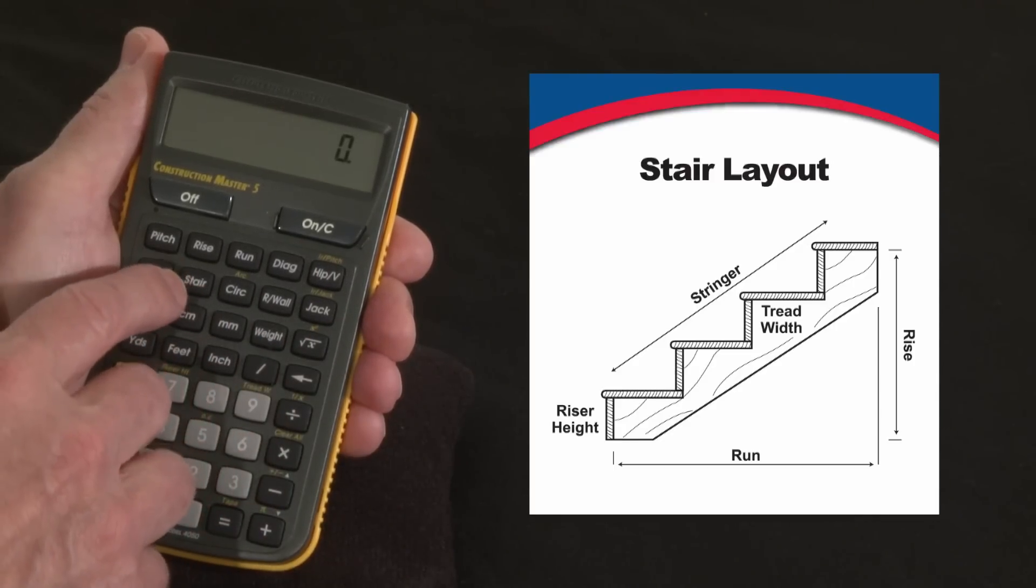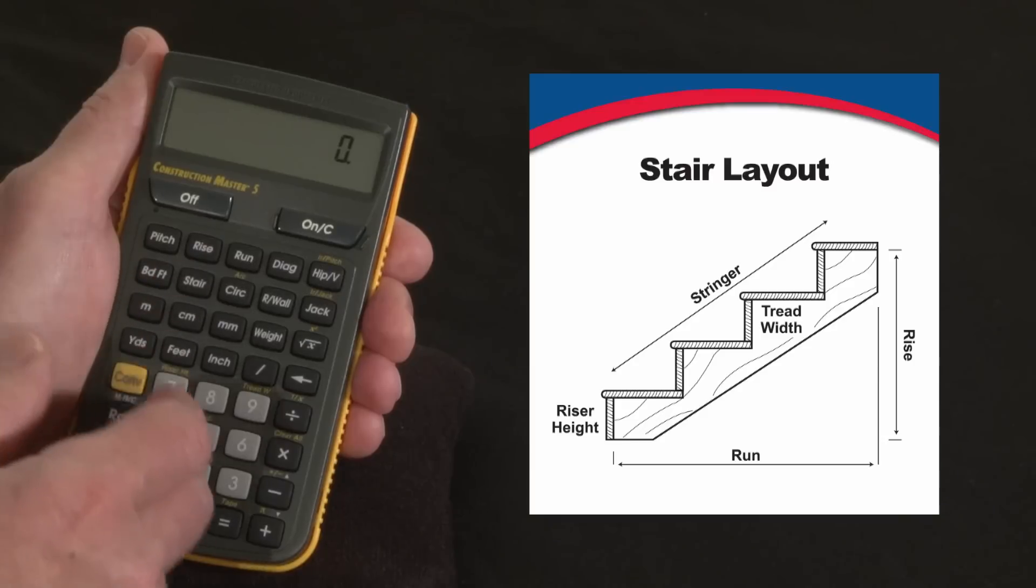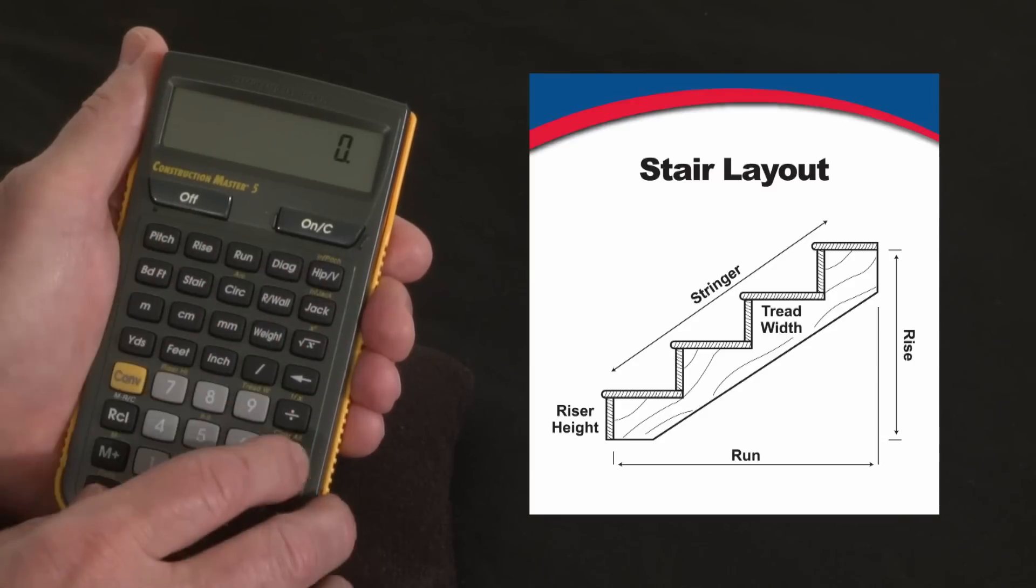First you need to understand that the target riser height built in, the default, is seven and a half inches. You can set it for five or you can set it for eight, but that's what its target is. So we'll use that for right now.